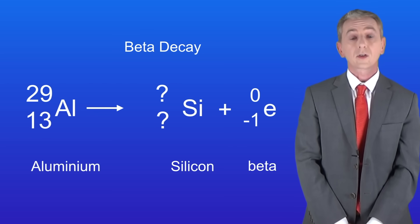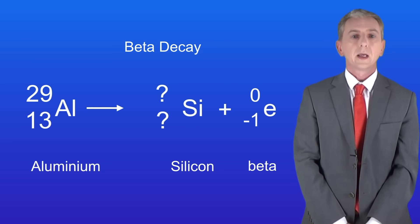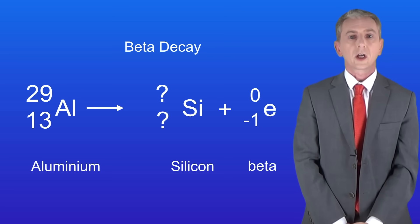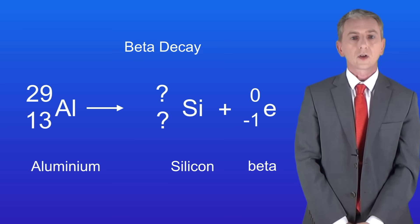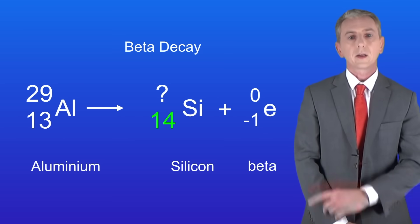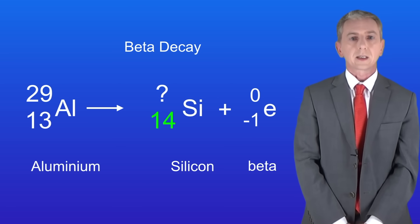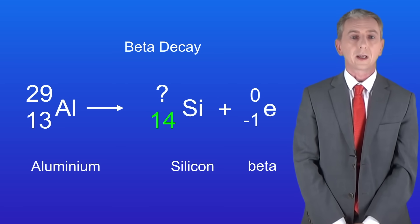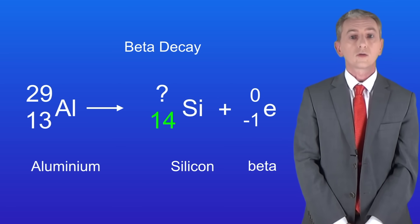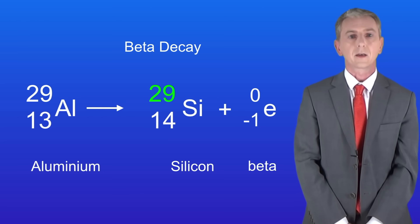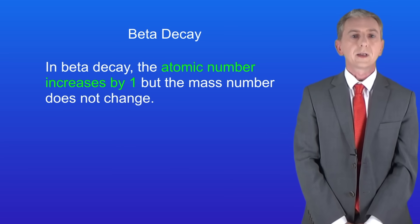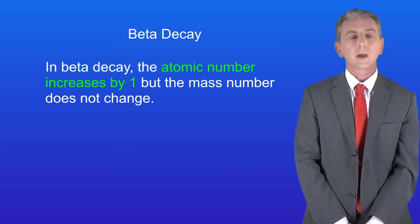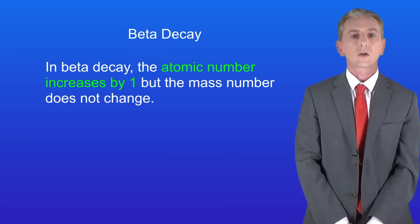This shows the beta decay of an isotope of the element aluminium, changing to silicon by releasing a beta particle. Because a neutron has changed to a proton, the atomic number increases by 1, so the atomic number of the silicon must be 14. In beta decay the mass number does not change, because the total number of protons and neutrons in the nucleus stays the same, so this silicon isotope has a mass number of 29. The rule for beta decay: the atomic number increases by 1 but the mass number does not change.